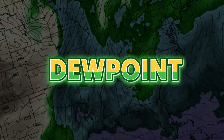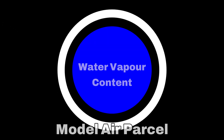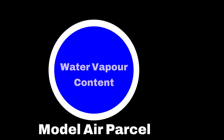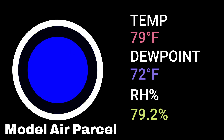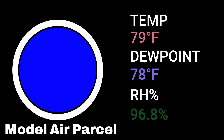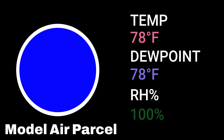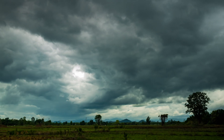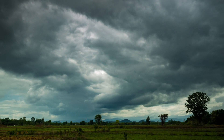The dew point is the temperature at which air must be cooled at constant pressure to become saturated with water vapor. Dew point is a better measure of moisture content than relative humidity. While dew point tells us when water vapor will condense, relative humidity compares the amount of water vapor to the total possible amount of water vapor in an air parcel. I don't want to spend too much time on temperature and dew point, so let's move on to the next parameter.